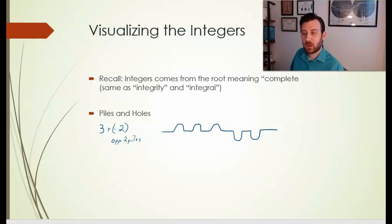Now we can look at this sandbox as having the equivalent amount of sand as a sandbox with only one pile. We can see that because these piles would have respectively filled each of these holes. So we know that 3 plus negative 2 equals 1.